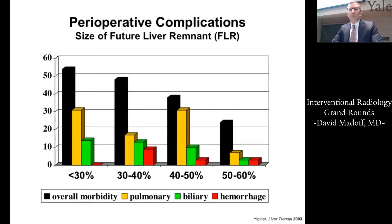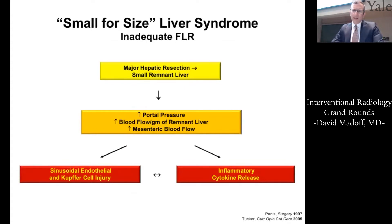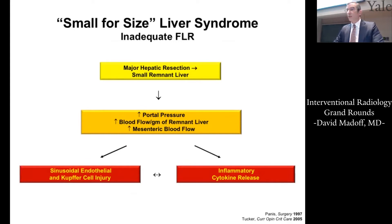We know that patients who do well after surgery really depends on the size of the future liver remnant, or FLR. There is a direct correlation between the size of the liver remnant and the overall number of perioperative complications — not necessarily severity, just overall number. This is related to an entity called small for size liver syndrome, where the same amount of portal blood flow goes through a much smaller volume of liver, leading to turbulence and ultimately graft or small liver failure.